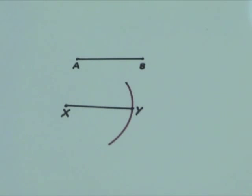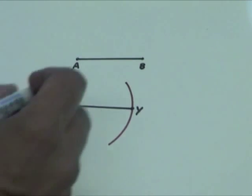Since XY was drawn with the same compass width as AB, XY must have the same length as AB. So, XY is congruent to AB.